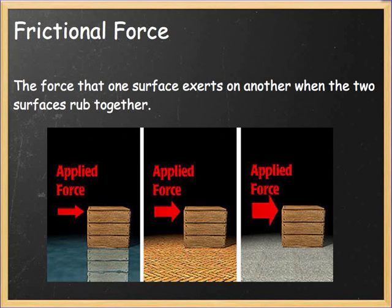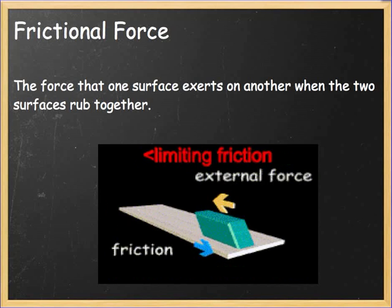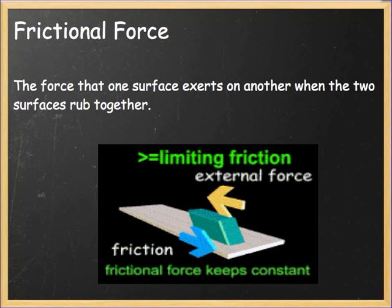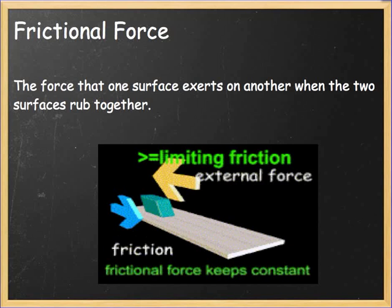Frictional force is the force that one surface exerts on another when two surfaces rub together. If I were to apply a force to this wooden box — whether it's on ice, carpet, or tile — the different types of surfaces are going to cause different types of force against the applied force. You can see the yellow arrow exerting a force on this object where friction is actually working against it, equal and opposite in the opposite direction. The yellow arrow is bigger, indicating that you're applying a greater force on this object.